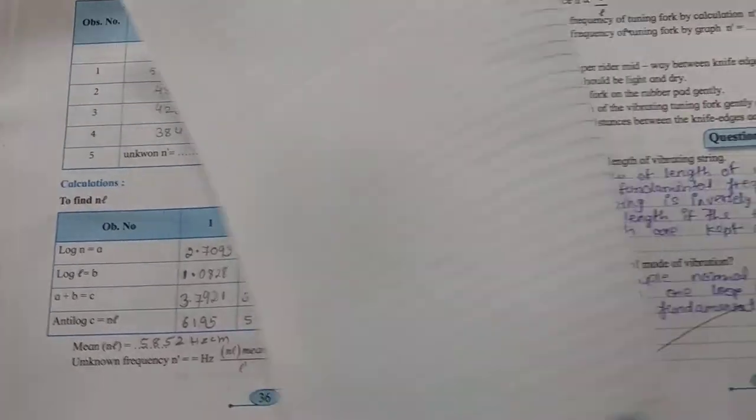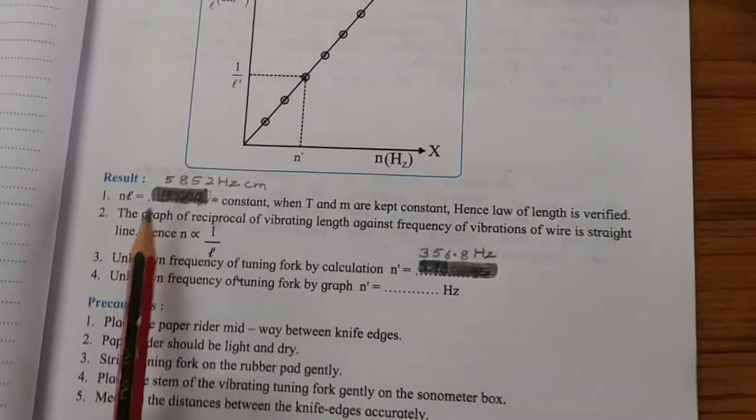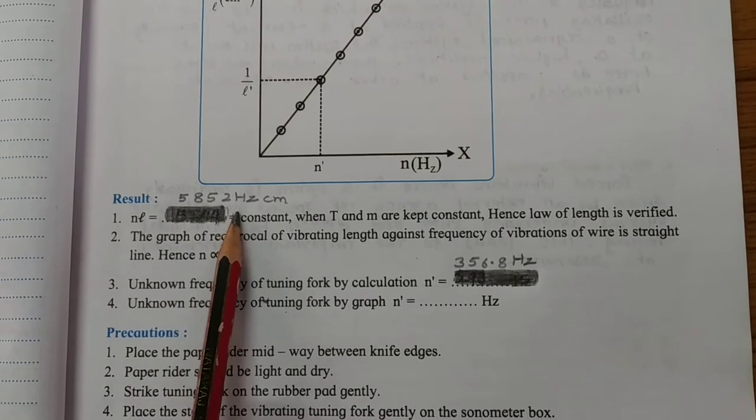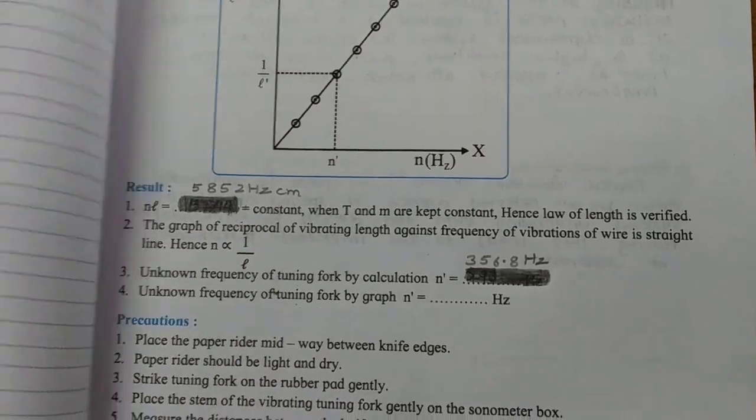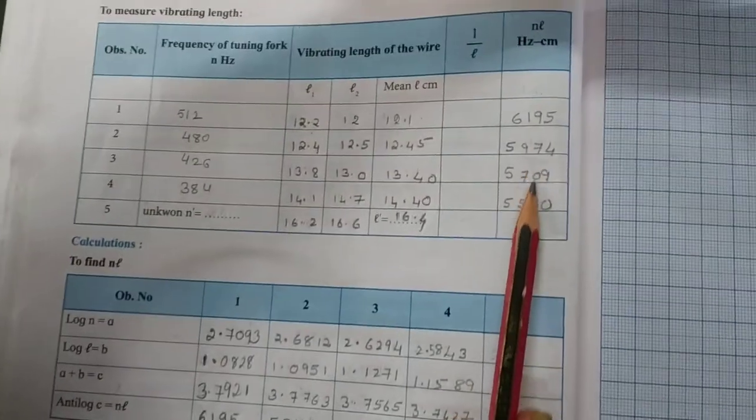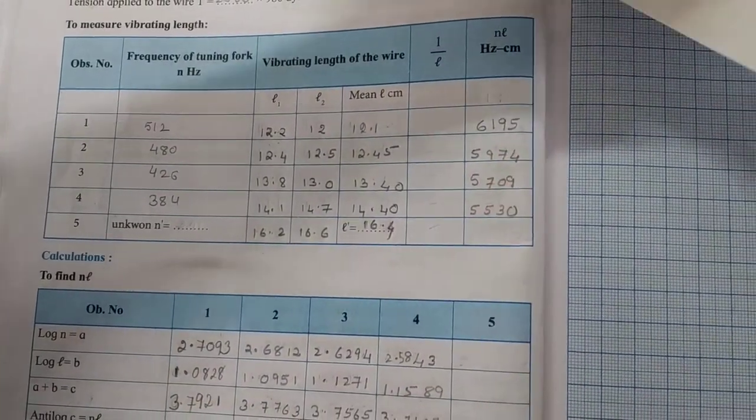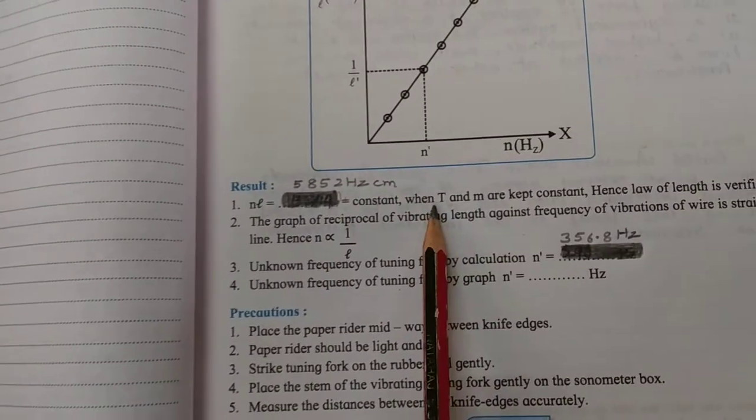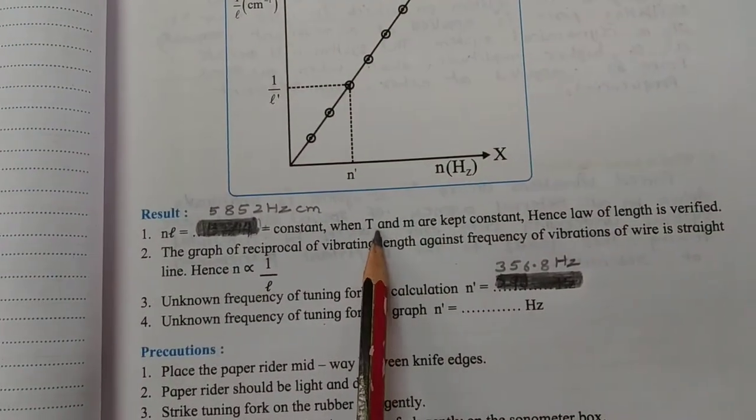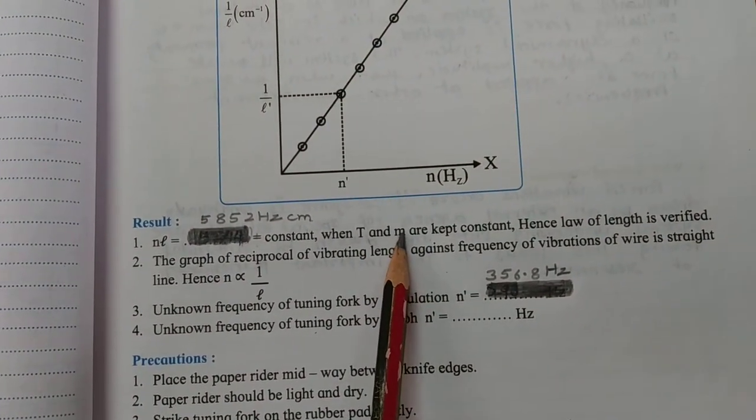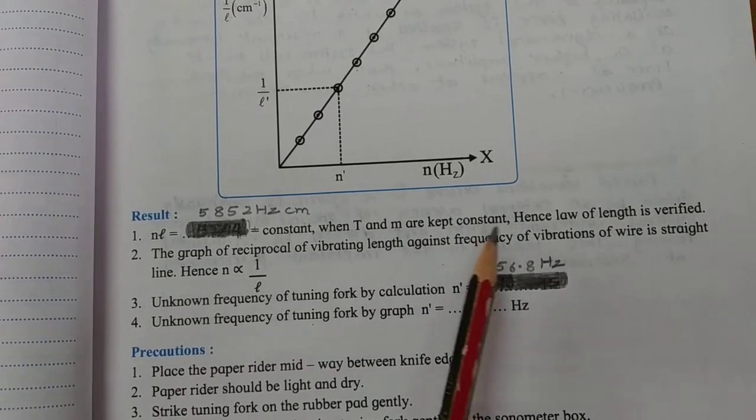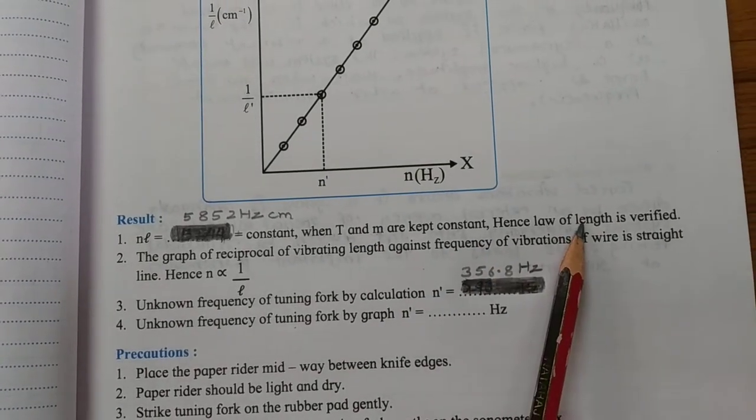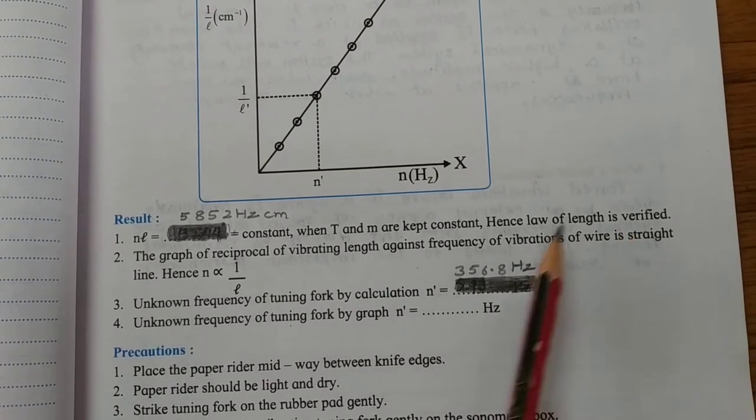Let us write down the result. We have nl is equal to 5852 hertz centimeter, which is constant. If you look over here, the readings are almost around 6000, so they are constant when t and m, the tension and the linear mass density, m is kept constant. Hence, the law of length is verified. nl is constant.